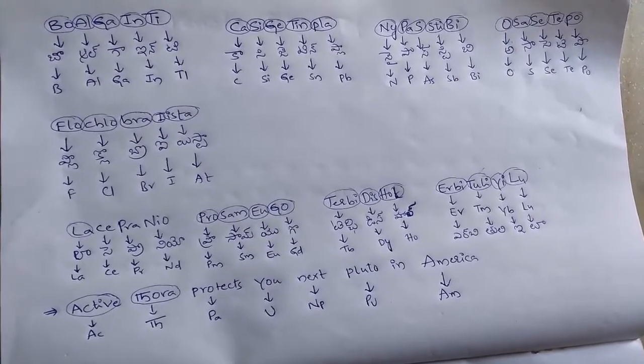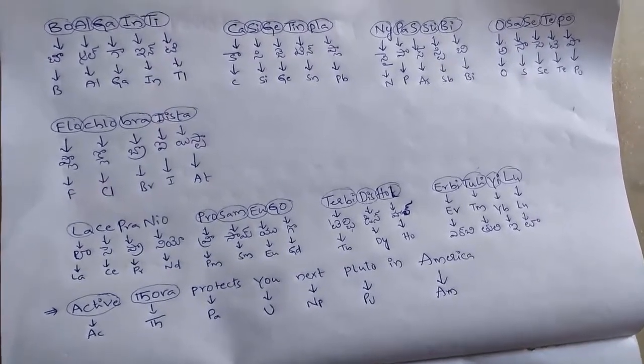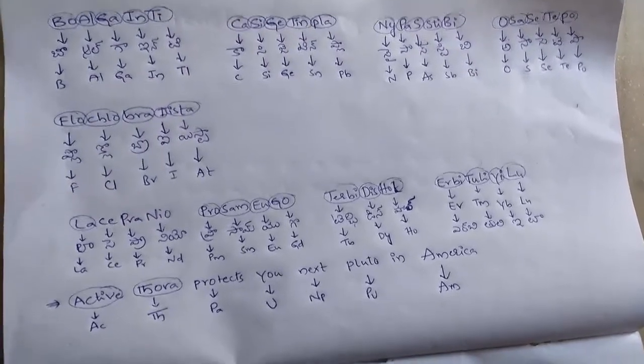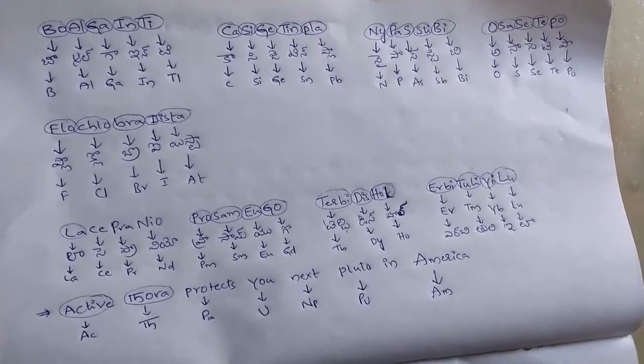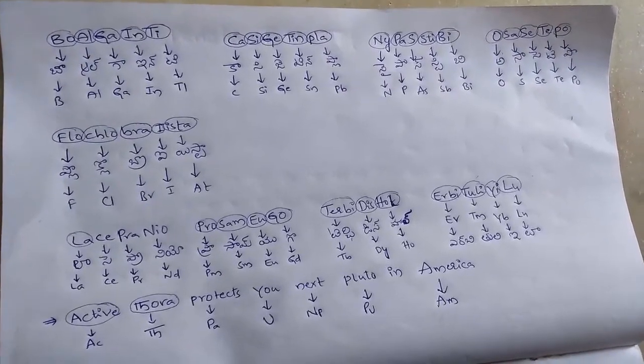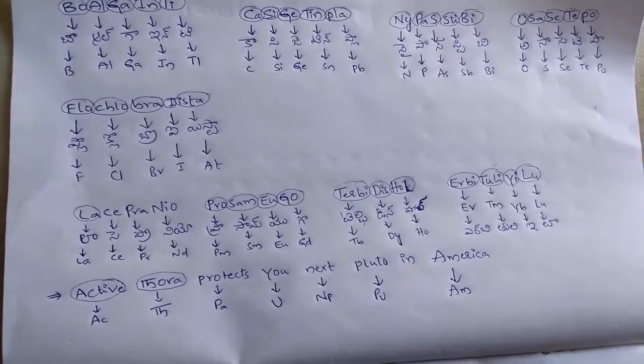Next, Asasi Tepo. Asasi Tepo. O means oxygen, S means sulfur, Se means selenium, Te means tellurium, Po means polonium.